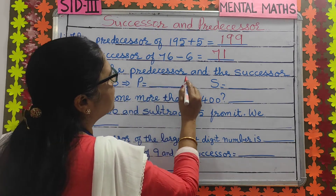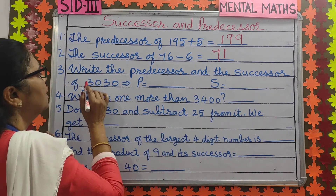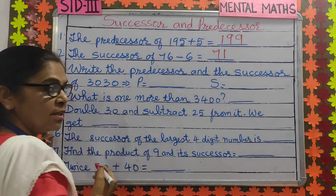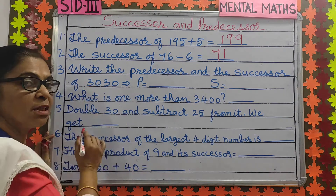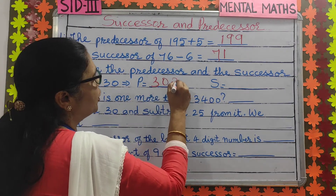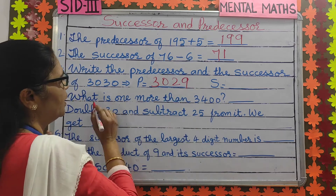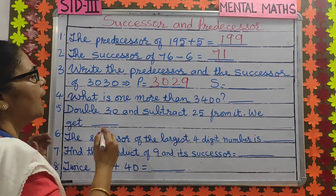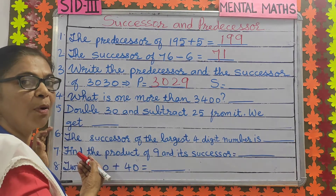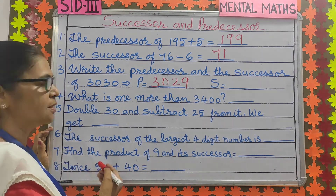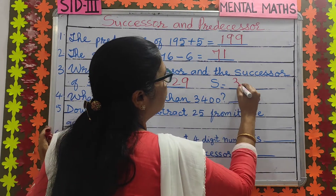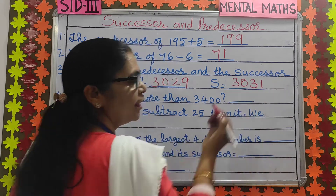Number 3: write the predecessor and the successor of 3030. What comes just before 3030? 3029. So the predecessor is 3029. And for the successor, you add 1 to the number. 3030 plus 1 is 3031.